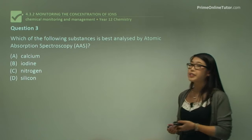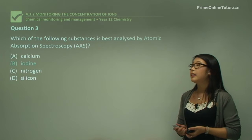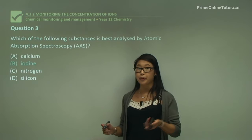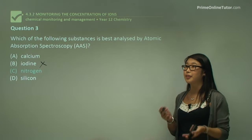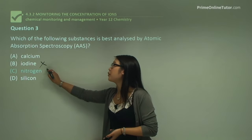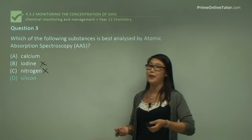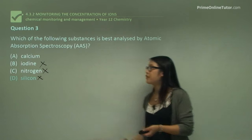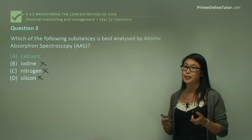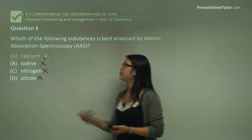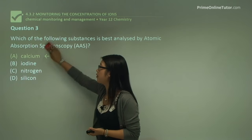Question three: which of the following substances is best analyzed by AAS? Iodine is not suitable because it's not a metal ion. Nitrogen is also not a metal, so AAS is not used for it. Silicon is also not a metal ion, so it's incorrect. Calcium is a metal ion, and therefore we can use AAS to determine its concentration in a sample — calcium is correct. It's important to note that AAS is only for metal ions, not other elements.